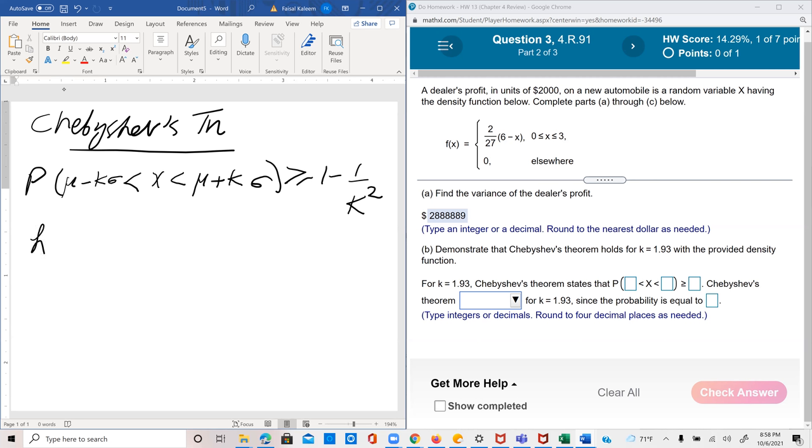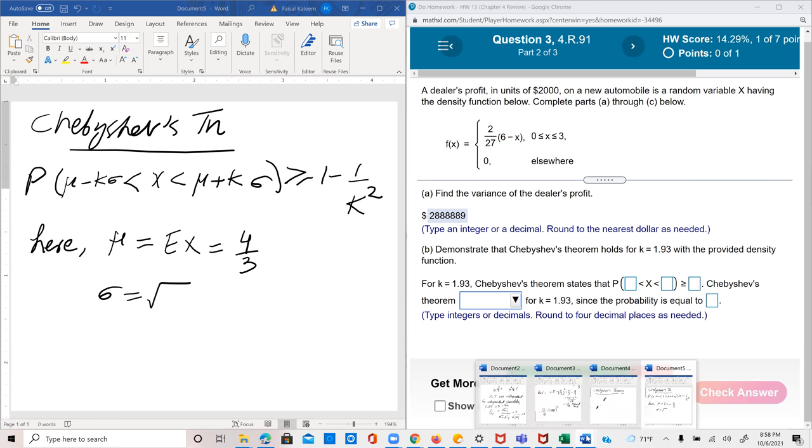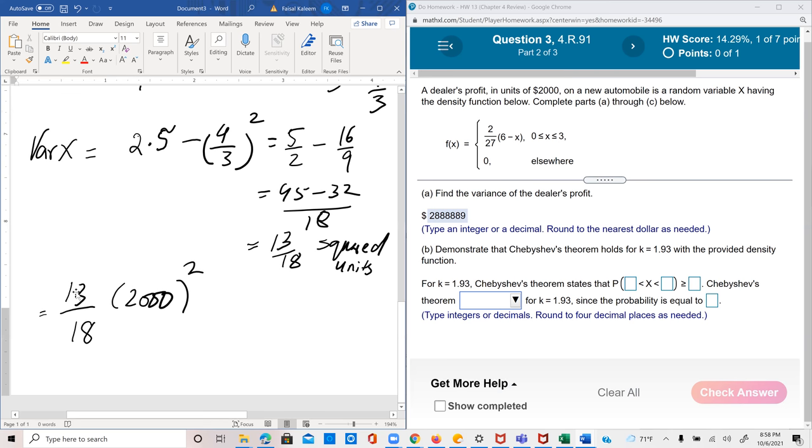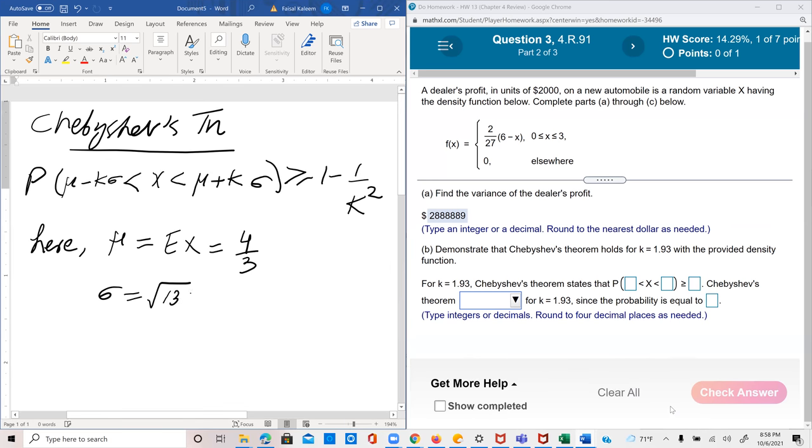So μ in this case is E of x, which was 4 thirds. And sigma would be the square root of variance. So square root of the original variance we had in terms of x was 13 over 18. So this would be square root of 13 by 18.